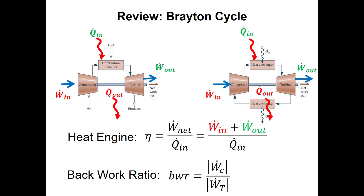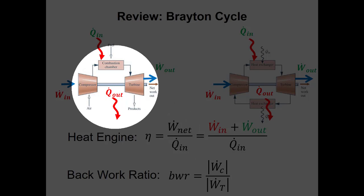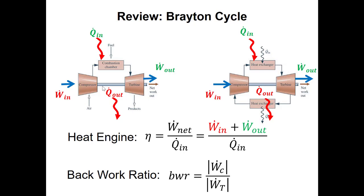Last week we finished talking about the Brayton cycle. Our first big question is what's the energy benefit and the energy cost. This is a heat engine so the benefit is net power or net work, and the energy cost is heat transfer in, which gives us the thermal efficiency. We also talked about how in Brayton cycles the power plant is the first consumer of power, so we have to look at the back work ratio — the compressor power divided by the turbine power — because the compressor is mechanically connected on the same shaft to the turbine. As the turbine spins it drives the compressor, and the remainder of the power goes out to an electrical generator.